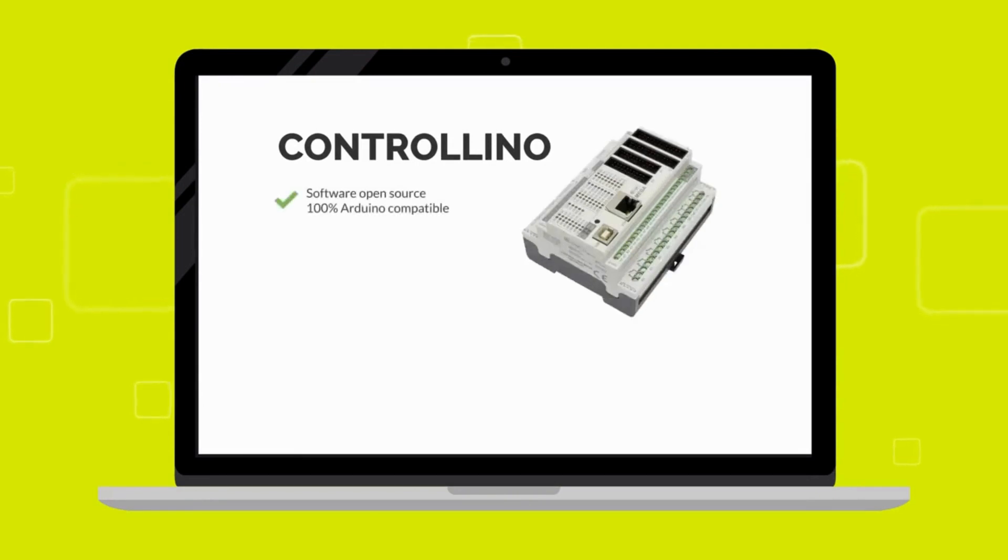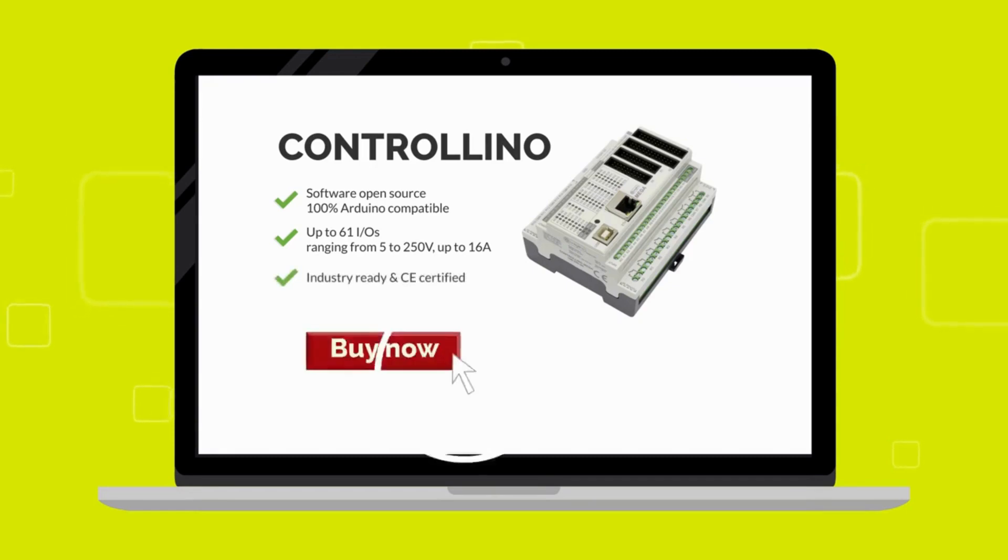It offers up to 61 inputs and outputs, ranging from 5 to 250 volts, and up to 16 amperes, out of the box. No shields or modules required. Furthermore, Contralino is industry-ready and CE-certified.